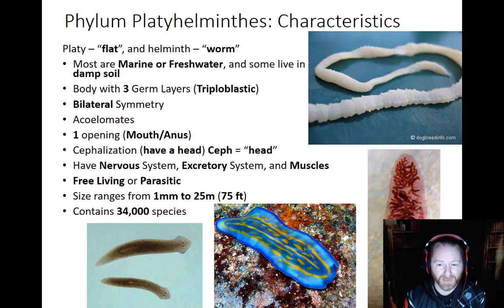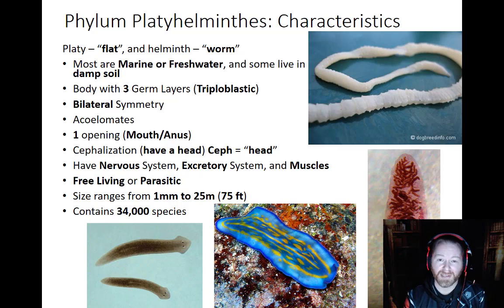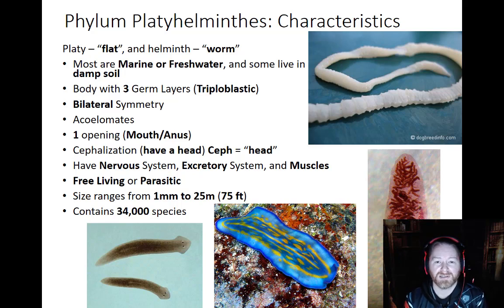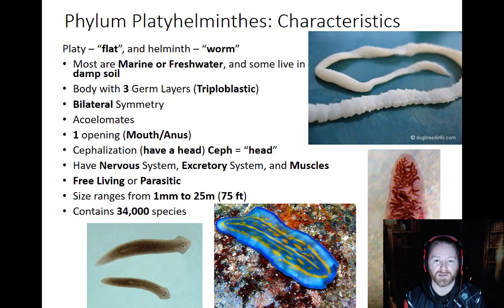They are bilateral and they are acoelomates, meaning they do not have a body cavity surrounding their organs. They have only one opening — their mouth and their anus are the same thing; what goes in will also come back out. They do have cephalization, which was not something we clearly saw in cnidarians. They have a defined head, and most of their sensory organs and features are located there.